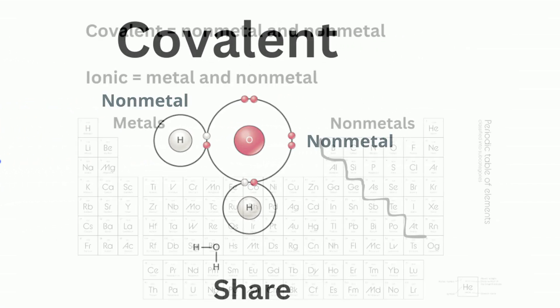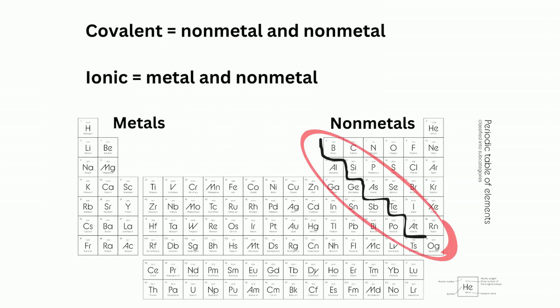If you look at the periodic table, you can locate this stair step. Elements to the left of the stair step are metals, except for hydrogen, which is a nonmetal, and to the right are nonmetals.